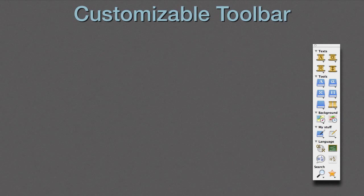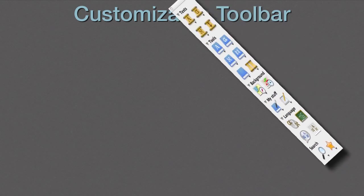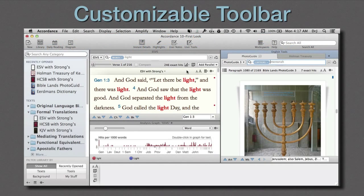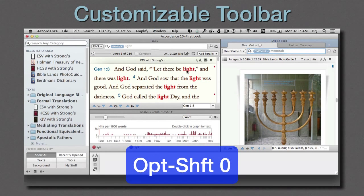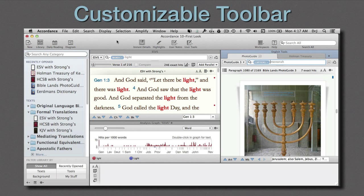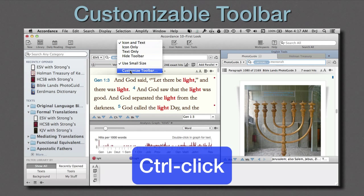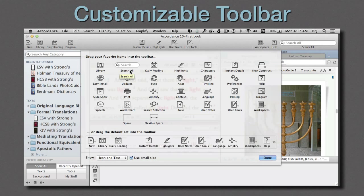One of the places we've been able to save space is by eliminating the resource palette. It's been replaced by the new toolbar, which can be hidden or revealed with a single key combo: Option Shift Zero. The toolbar is also customizable, so that users can place their most commonly used actions right at their fingertips. Use the contextual menu — Control-Click — to open the toolbar preferences. Now let's add a few icons.